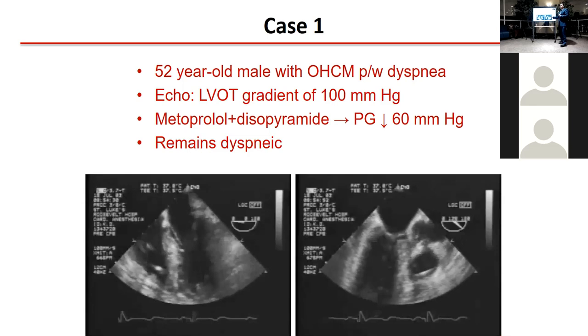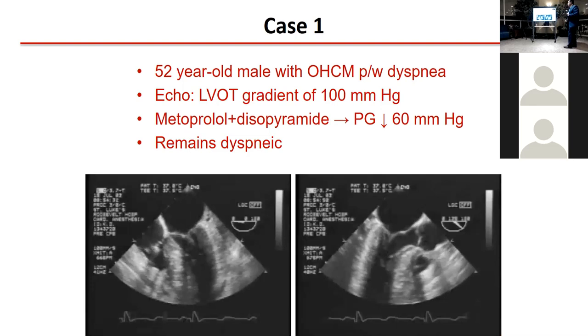These are transverse images, and as mentioned, you have that septal bulge — that septal hypertrophy — and you have the mitral valve.